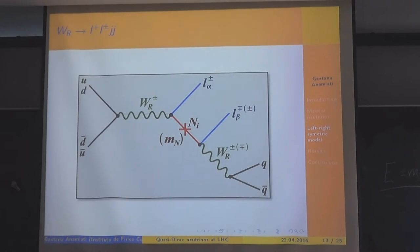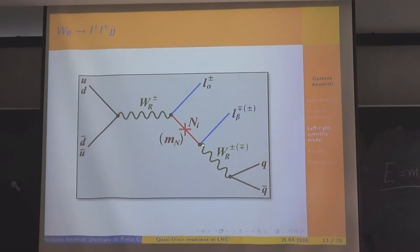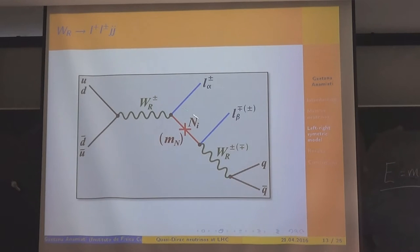Let's go to the goal of the work. We are interested in analyzing this kind of process. Imagine that a W_R-plus is produced on-shell and decays into L-plus and a heavy neutrino. There are two possibilities: if the neutrino is a Dirac neutrino, it can decay only into L-minus, because a Dirac neutrino conserves lepton number. But if the neutrino is a Majorana neutrino, since a neutrino and an antineutrino are the same particle, the antineutrino can decay into L-plus, and the lepton number is violated by two units.